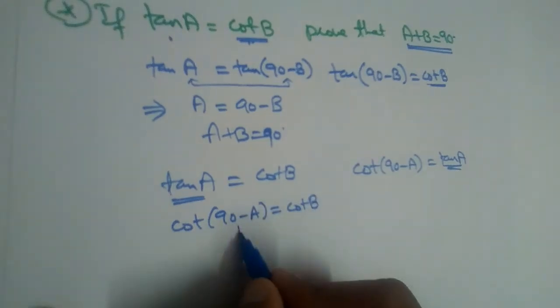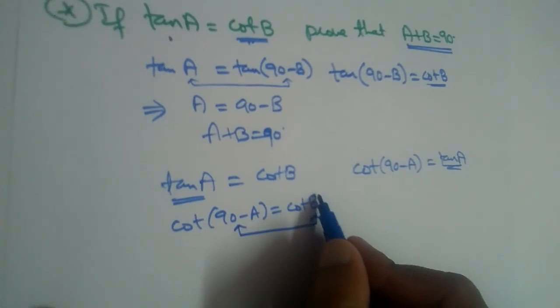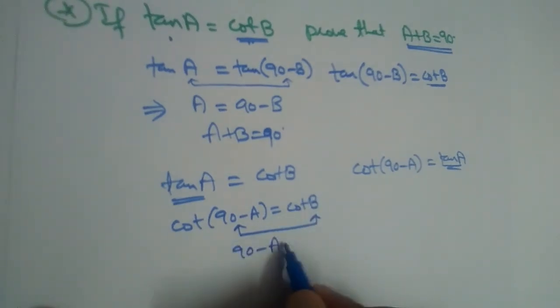So we should take this 90 minus A equal to B. 90 minus A is equal to B, so A goes on the other side becomes plus, so this is A plus B is equal to 90 degrees.